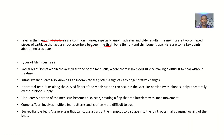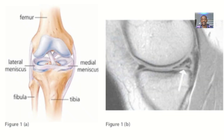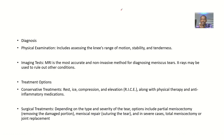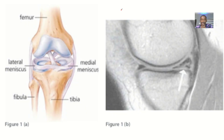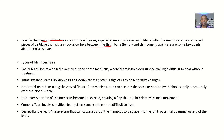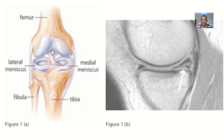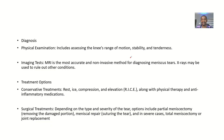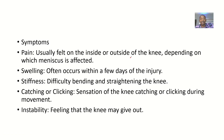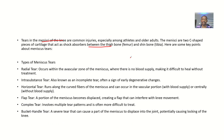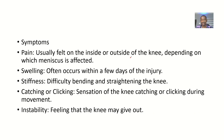For the types of meniscus tears, we have the radial tear, the intrasubstance tear — also known as an incomplete tear — the horizontal tear, the flap tear, the complex tear, and the bucket handle tear.